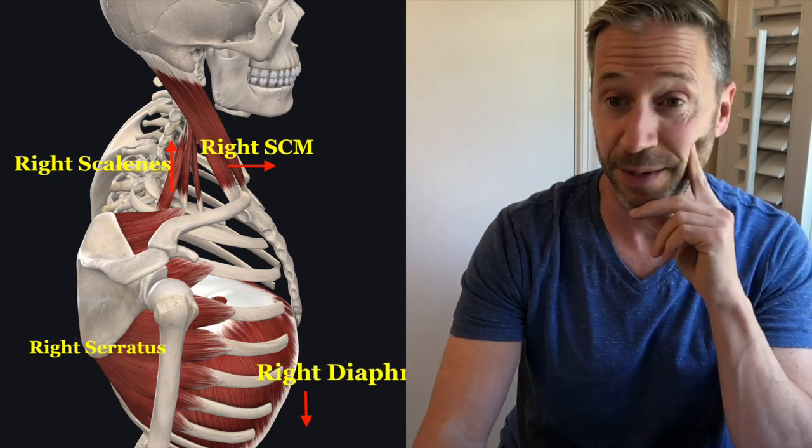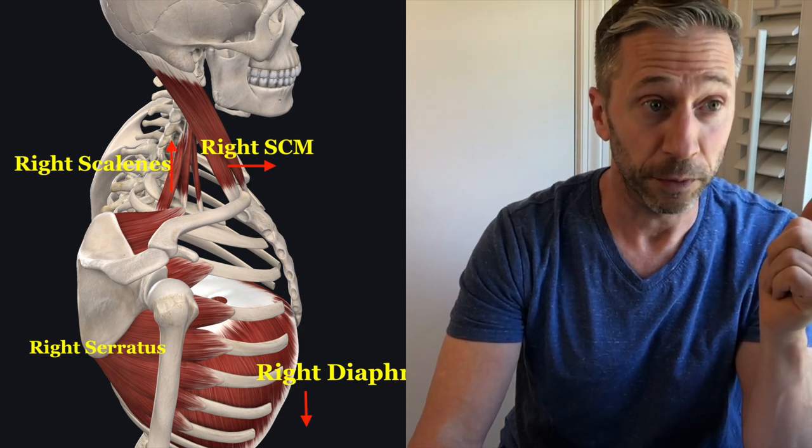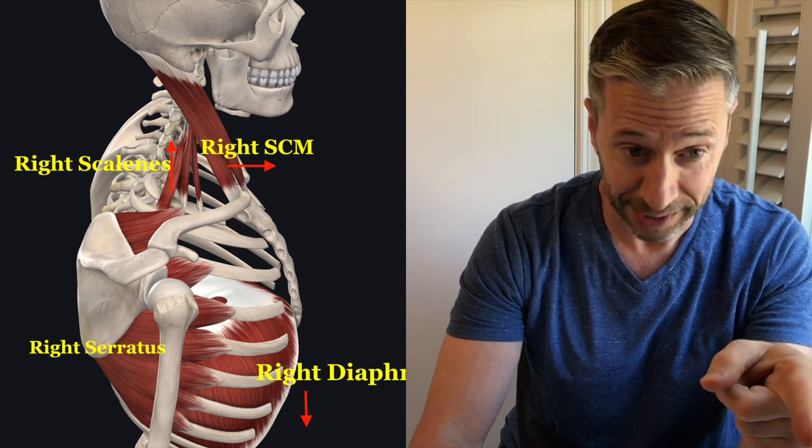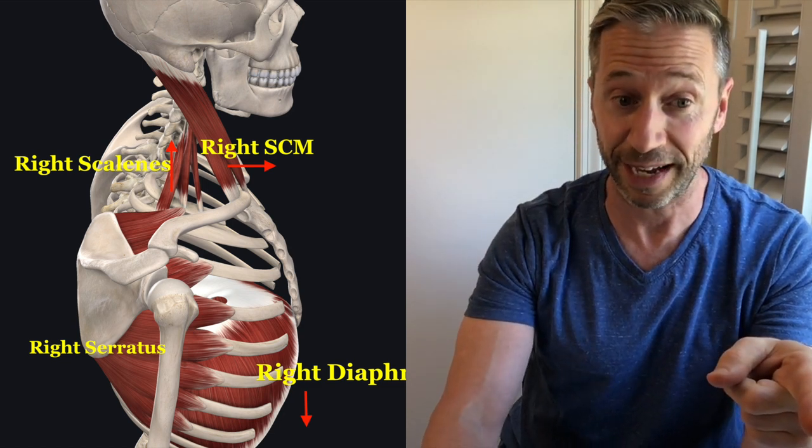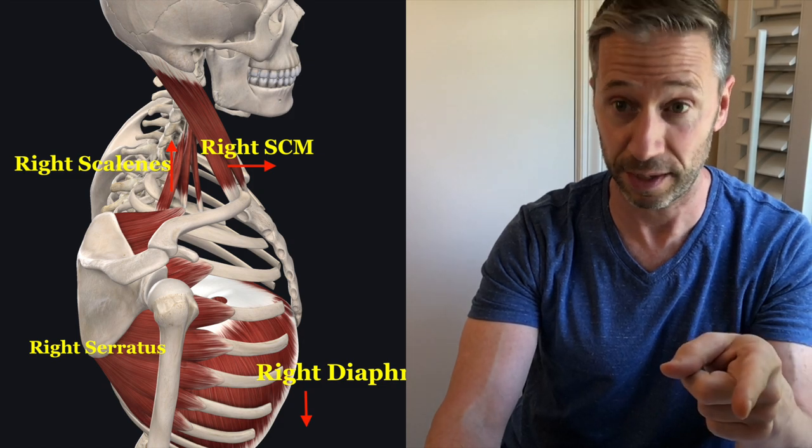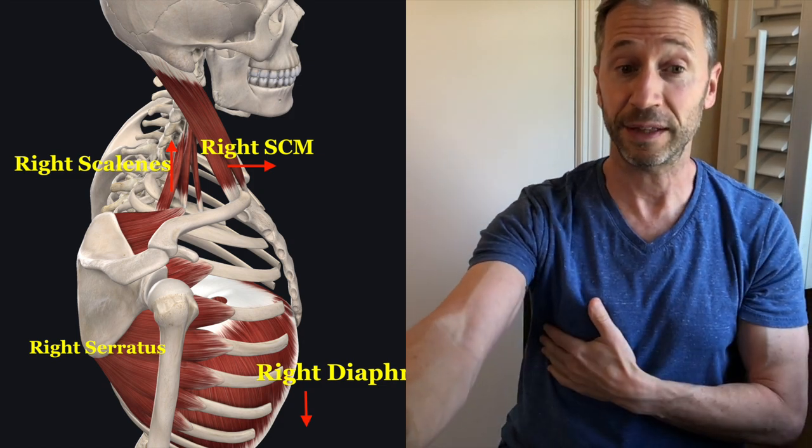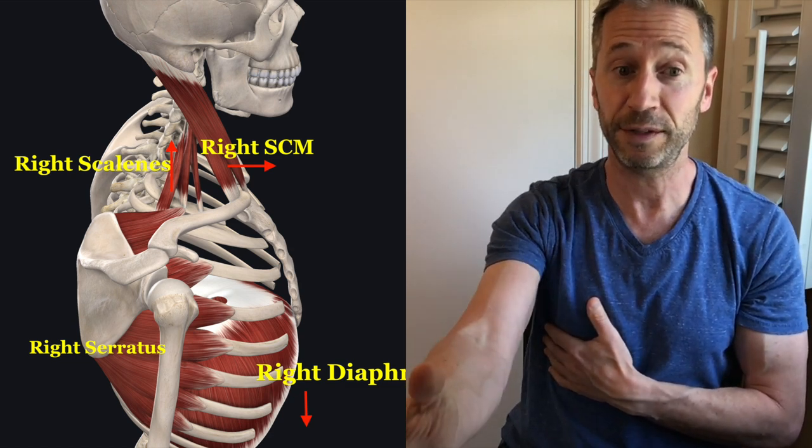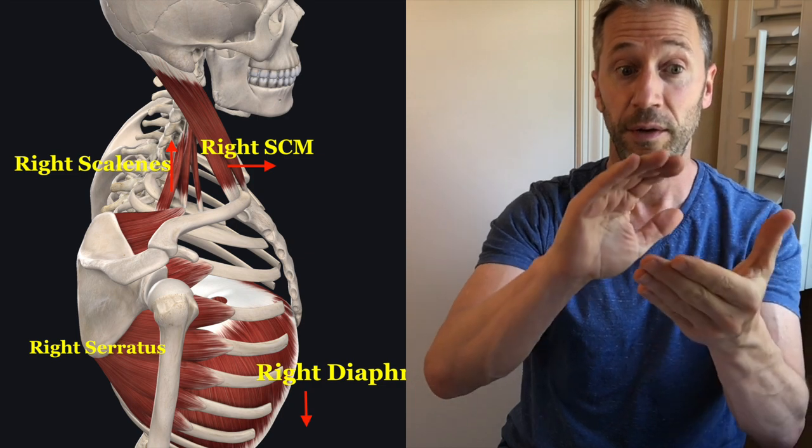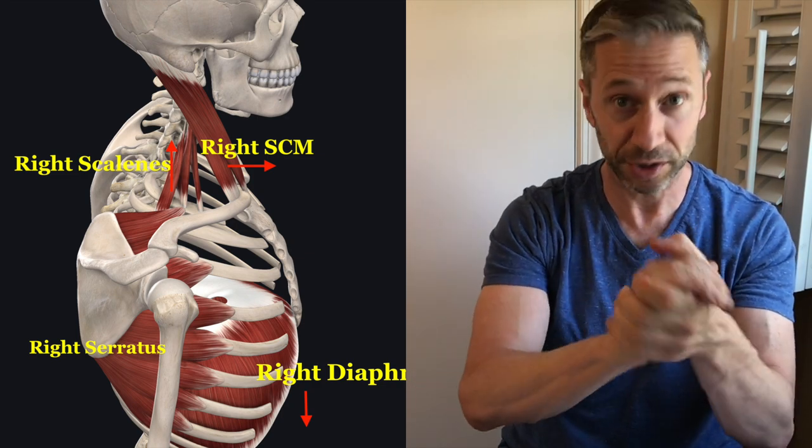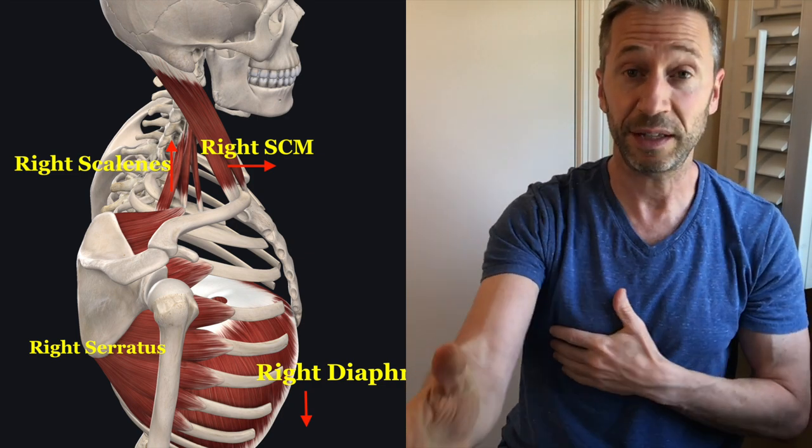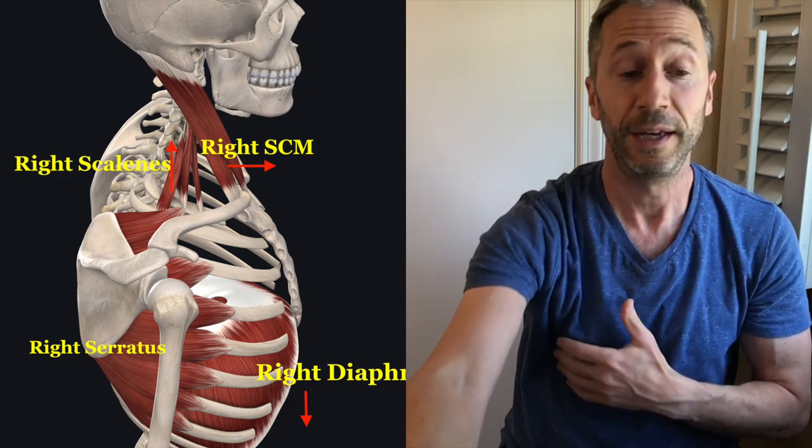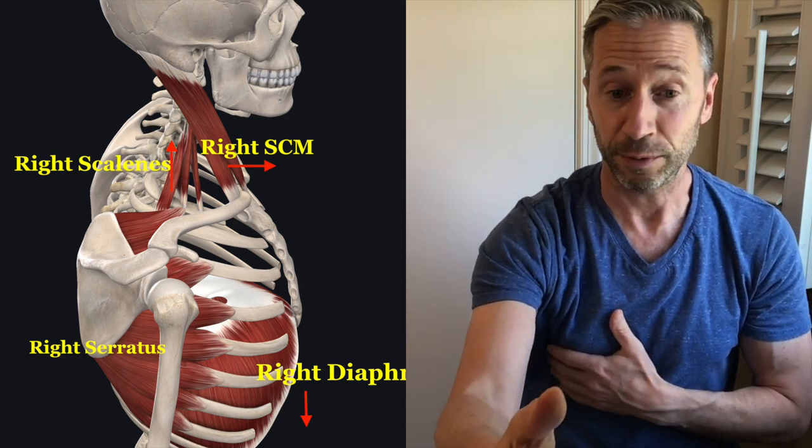You see that right serratus muscle - it should be stabilizing that scapula to the rib cage and controlling the scapula as you move your right arm. It provides efficient rib cage-scapular relationships, particularly when that arm moves forward or the rib cage moves back. That's why that right serratus is so important.